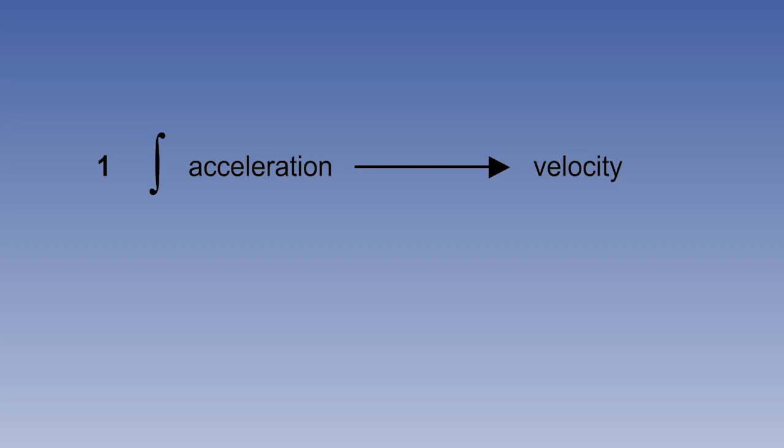Integrators convert a rate of change over a period of time into total amount of change over that time. If the input is acceleration, which is a rate of change of velocity, then the output is change of velocity. If the input is velocity, which is a rate of change of position, then the output will be change of position, which is another way of saying distance gone.